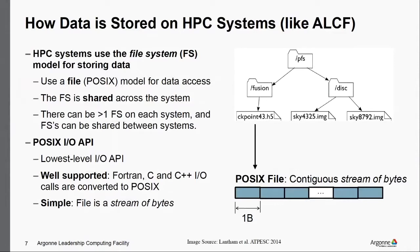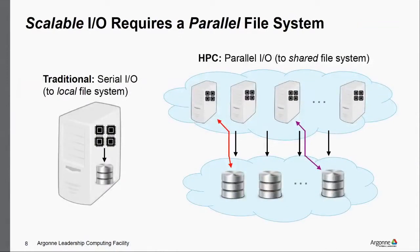How are things different on HPC machines? The simple way to think about it is we have a parallel file system instead of a serial file system. On your workstation, you have some cores interacting directly with the local file system — flash storage or hard disk. On HPC systems like those at ALCF, you generally have a cluster of compute nodes interacting with a separate cluster of storage devices, connected through a parallel file system that allows concurrent access.